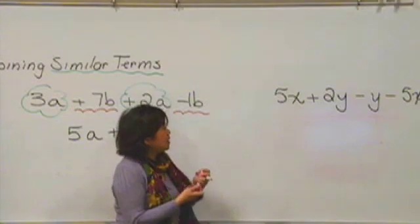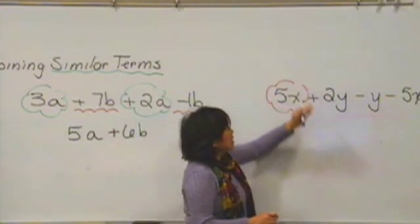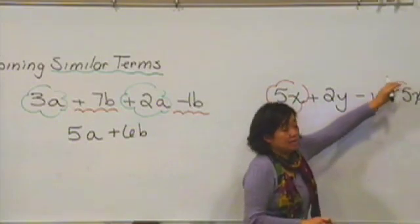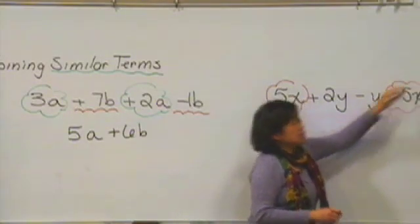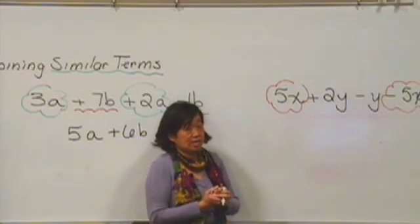So let's take a look at this one here. So here we have 5x and notice down here we have a negative 5x as well. So if you can combine those, and if you have 5 minus 5, you get 0. So there will be no x's left.